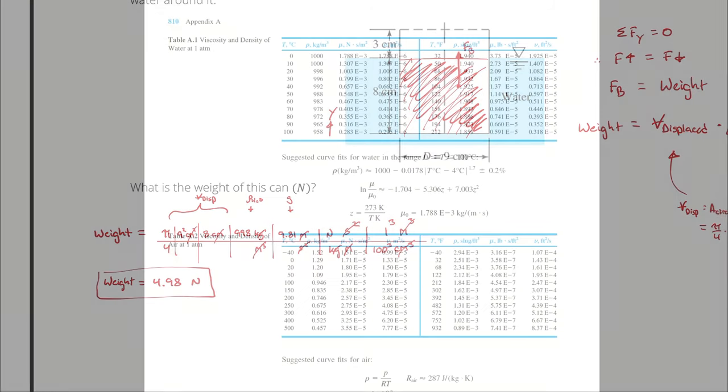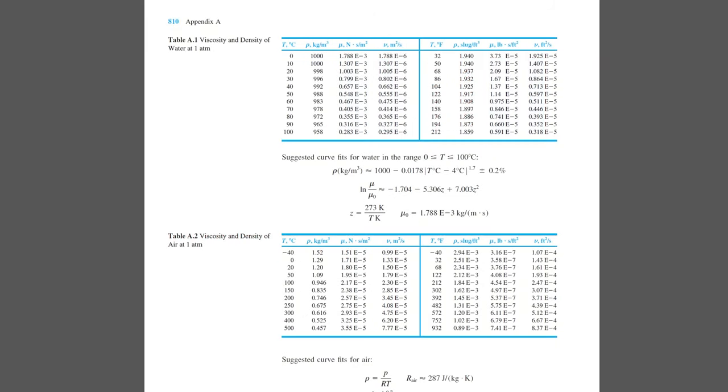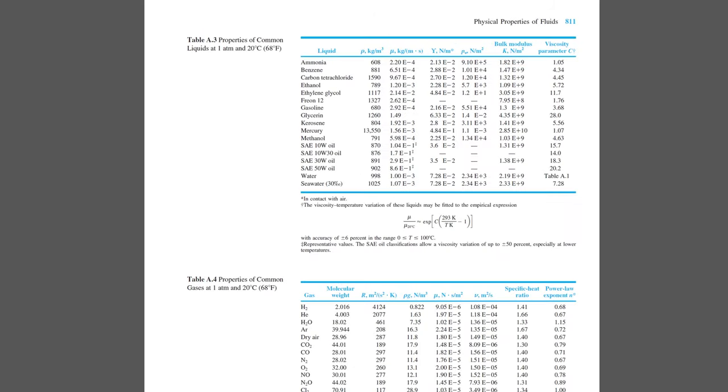Well, if we go back into our appendix and we navigate over to table A3 this time, we can see the density of a variety of different liquids at 1 atmosphere and 20 degrees Celsius. I have seawater here, which is 30% salinity, and that would be a density of 1025 kilograms per cubic meter.